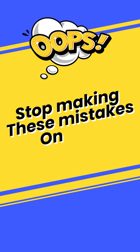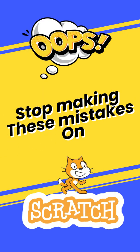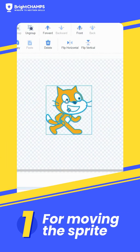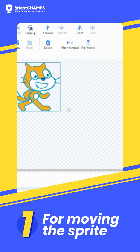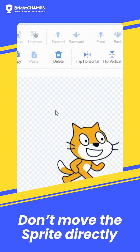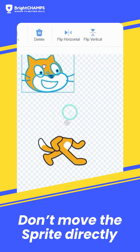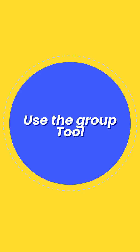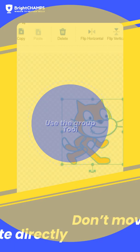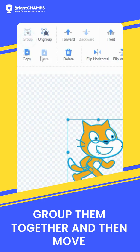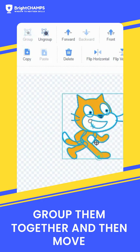Stop making these mistakes on Scratch. Number 1: for moving the sprite, don't move the sprite directly. Instead, use the group tool. Select all the parts of the sprite, group them together, and there you go.